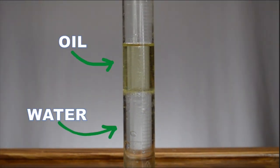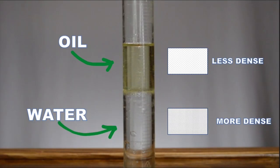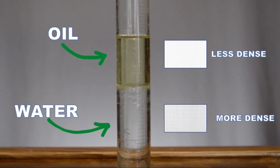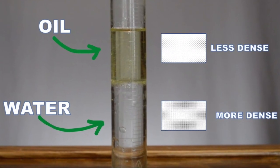Oil forms the top layer because it has a lower density than water. Water sinks to the bottom because its density is greater than the density of oil.